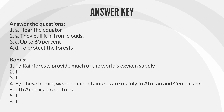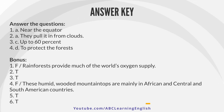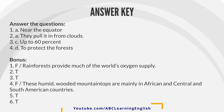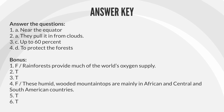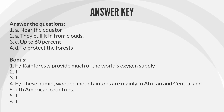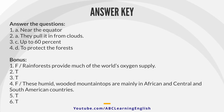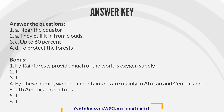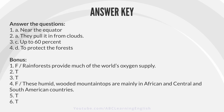Answer key. Answer the questions: 1. A – Near the equator. 2. A – They pull it in from clouds. 3. C – Up to 60%. 4. D – To protect the forests.